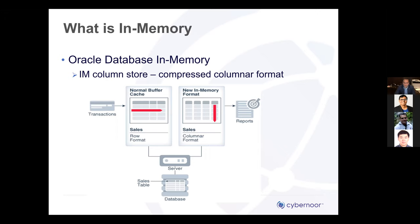Traditionally, orders and journals are stored in the buffer cache in block format with rows. Now with the in-memory store, data is also stored in columnar format. The database takes care of updates by updating both the buffer cache and the in-memory store. A new feature also automatically moves hot objects from the buffer cache into the in-memory store. Packaged apps can leverage this feature using the same SQL interfaces, UIs, and searches without having to transform, extract, or set up a separate in-memory store as other implementations require.